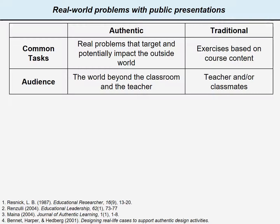The first component of authentic learning requires that activities target real-world problems with presentations of findings to audiences beyond just the classroom. Authentic tasks target real problems with the potential to have an impact on the outside world, turning exercises into important tasks. These activities allow students to connect to the world beyond the classroom and display knowledge to an audience other than the instructor.